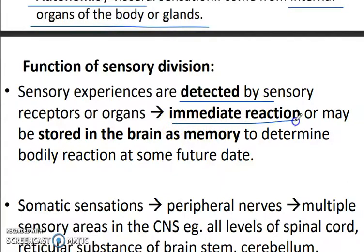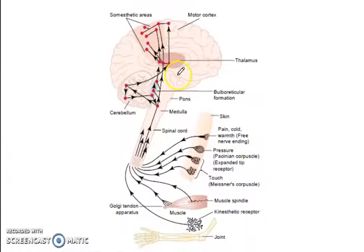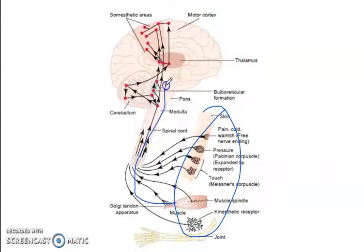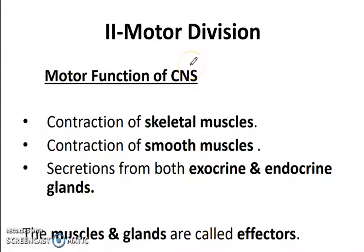The functions of the sensory division: sensory experiences are detected by sensory receptors or organs. An immediate reaction may occur, or the information may be stored in the brain as a memory. The receptors take messages from the spinal cord, medulla, and pons; some also go to the cerebellum, the thalamus, and then the motor cortex.